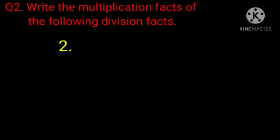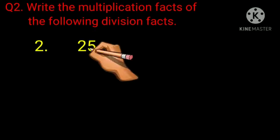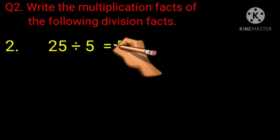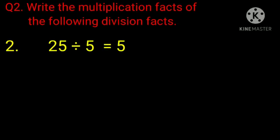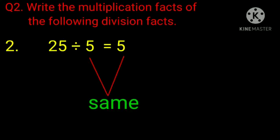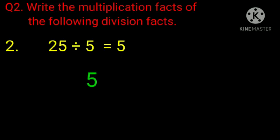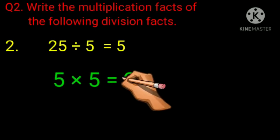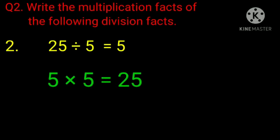Next question: 25 divided by 5 equals 5. If these two numbers are the same, you will get only one multiplication fact. So 5 multiplied by 5 equals 25. This is your answer.